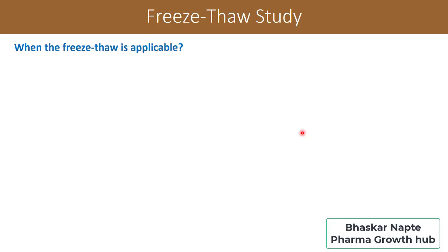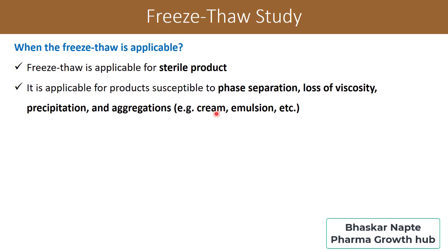When is freeze-thaw applicable? Freeze-thaw is applicable for sterile products and for products which are susceptible to phase separation, loss of viscosity, precipitation, aggregation, etc. You can think about semi-solids like cream emulsions, sterile products like injectables and MAbs. Proteins, peptides, and vaccines also come under the purview of freeze-thaw study.